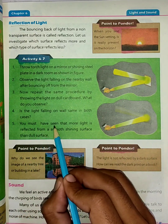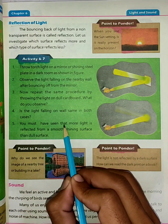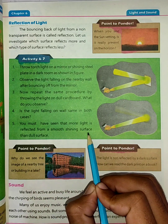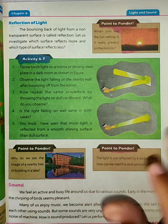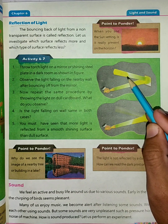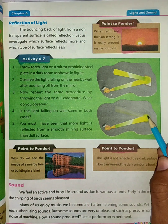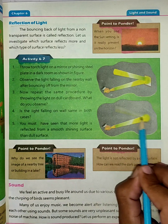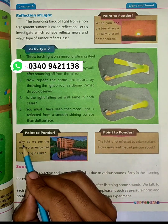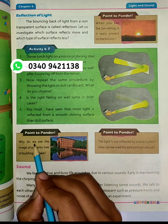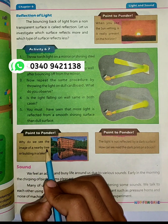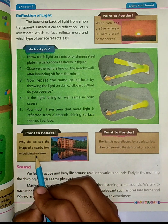You must have seen that more light is reflected from a smooth, shiny surface than from a dull surface. This is why we see the image of a nearby tree or building reflected in a lake.